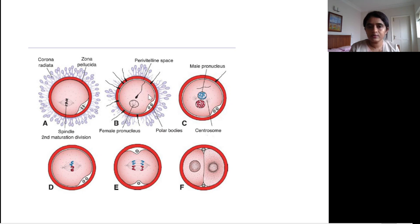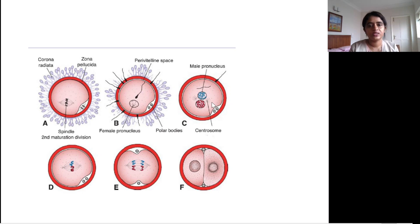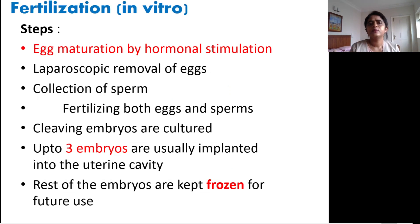You can see the corona radiata, zona pellucida, and the oocyte. Once the sperm enters, it is converted into a male pronucleus and the oocyte becomes a female pronucleus, forming the zygote. In the perivitelline space, two polar bodies are visible. A favourite exam question: how many polar bodies can you get at maximum in the perivitelline space? Since the first polar body released after the first meiotic division can also sometimes undergo the second meiotic division, you can get up to three polar bodies.